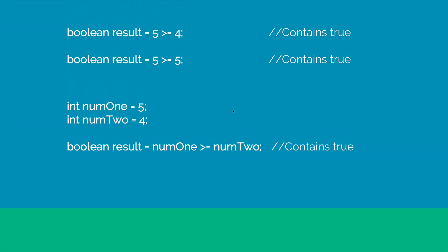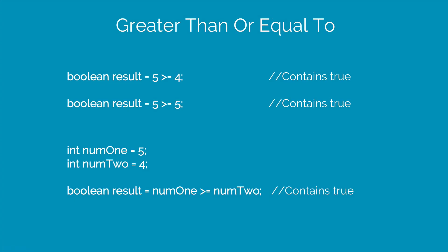Similarly, we have something called greater than or equal to. 5 greater than equals to 4 is true. 5 greater than equals to 5 also yields true. However, 5 greater than equals to 6 would be false which I have not shown here.